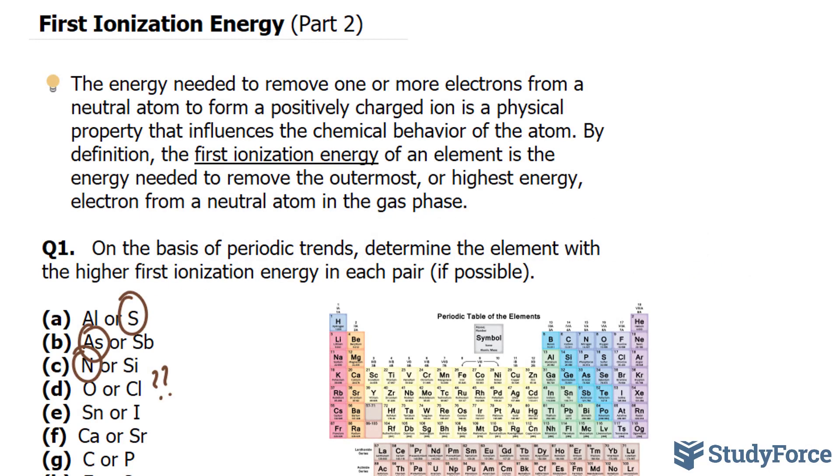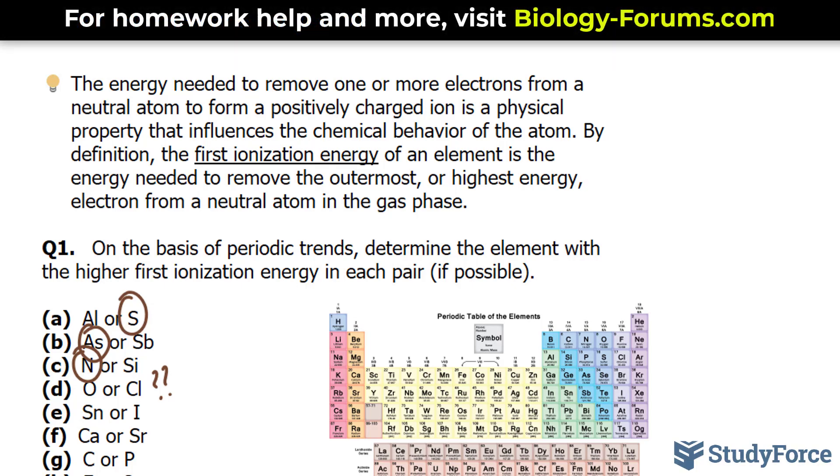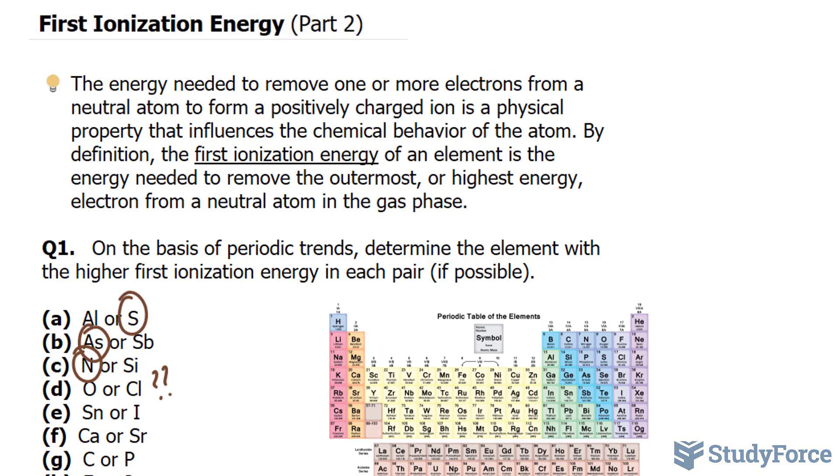In part two of our series on first ionization energy, we'll continue where we left off with question number one, part E, where we were trying to determine which element has the higher first ionization energy. We learned that as you move up a column and to the right of a period, the first ionization energy increases.